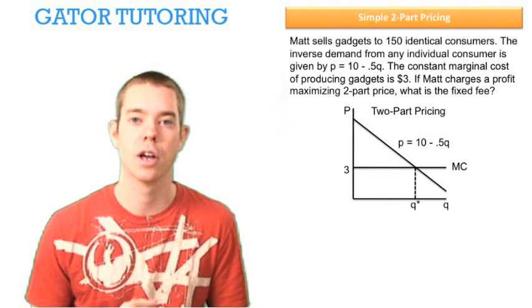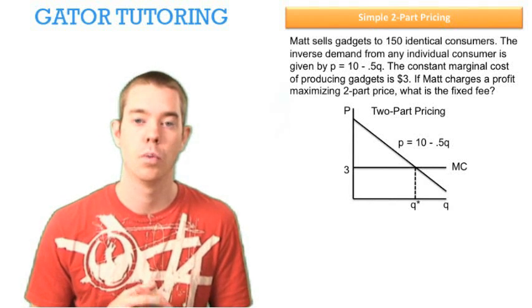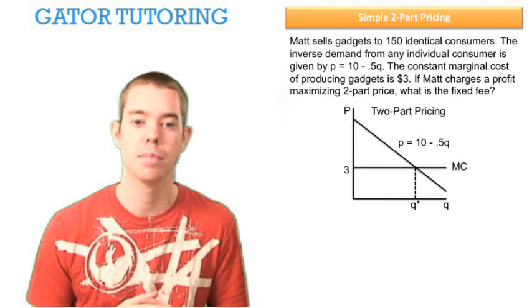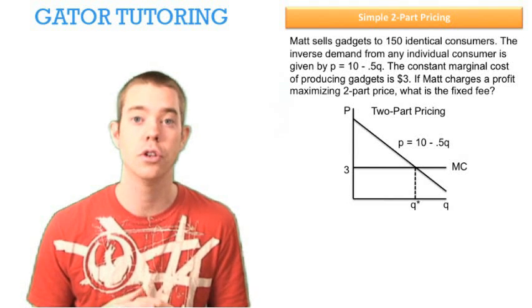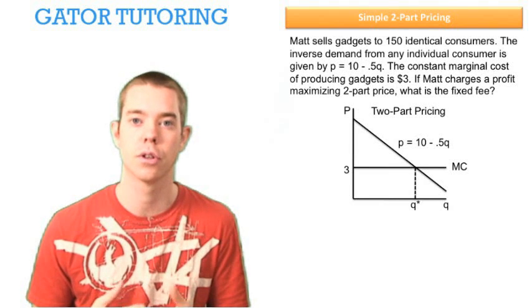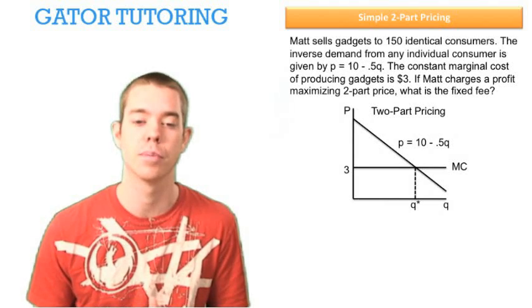Let's look at this graph to help us organize our thoughts. We see that we have a straight line for inverse demand because P equals 10 minus .5Q, the Q is just raised to the 1. So it's not Q squared or Q raised to the 3 or Q raised to the .5, it's just Q. That tells us we have a straight line for demand.